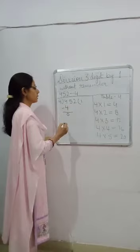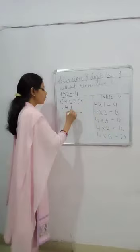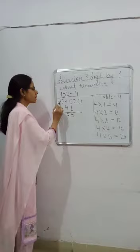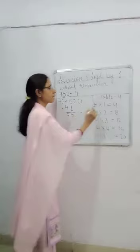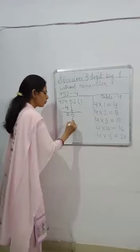Now, let's see the tens digit that is 5. So, we will bring down 5 over here. Now, the divisor is 4. So, nearest product of 4 is 4 ones are 4 again.